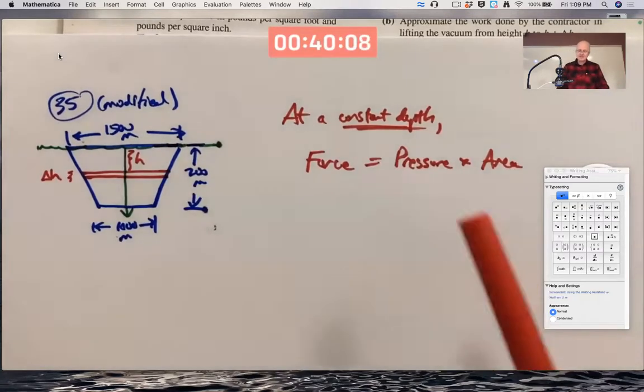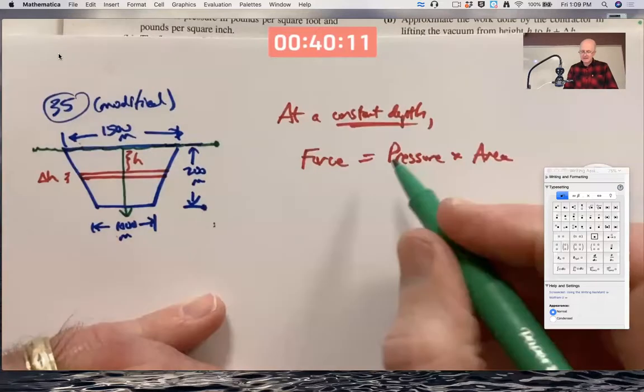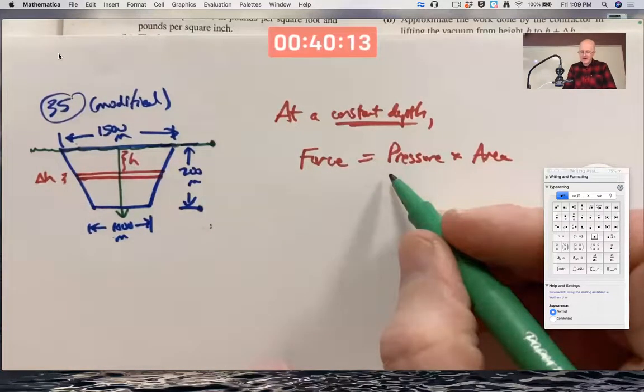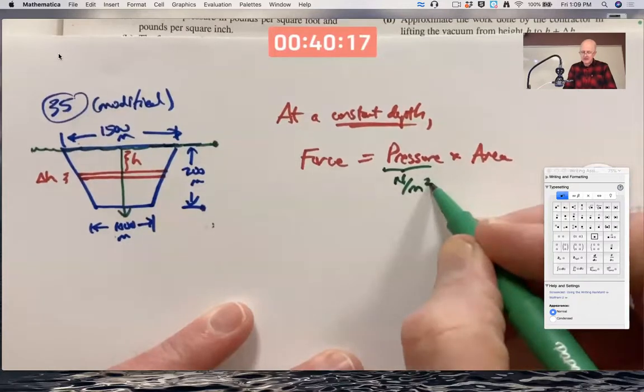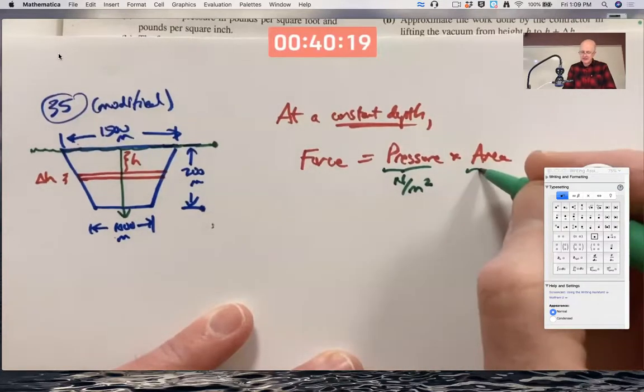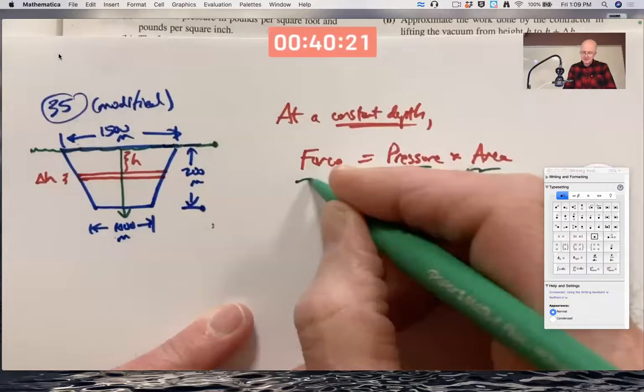But at a constant depth, you can say this. The units would be, well, pressure is force divided by area. This is newtons per square meter. This is in square meters. This is in newtons.